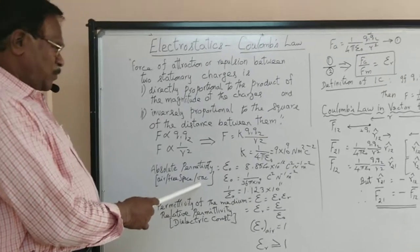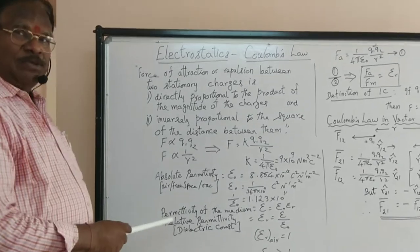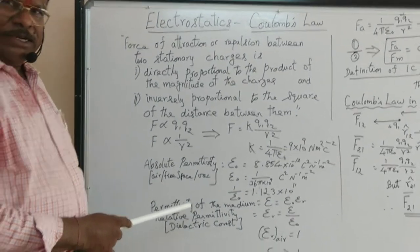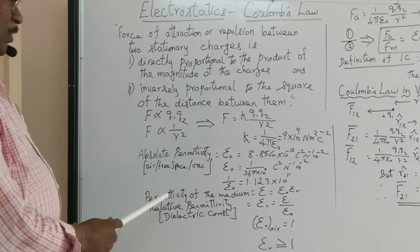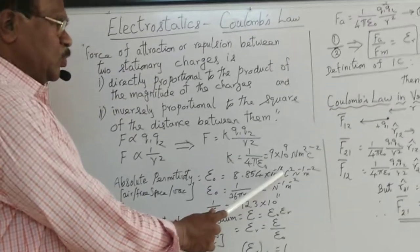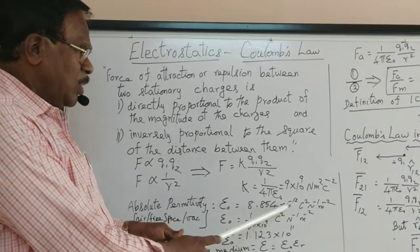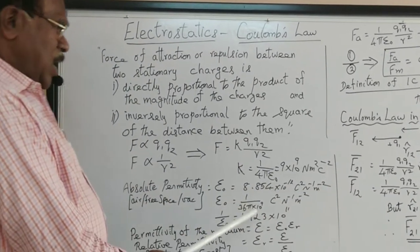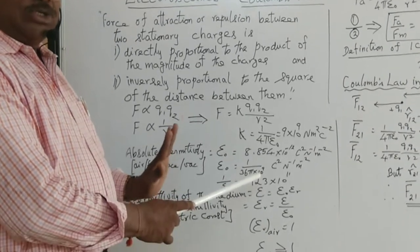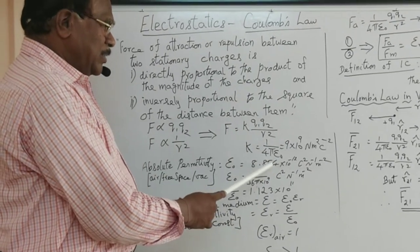For air, free space, or vacuum, the permittivity is otherwise called absolute permittivity. The word 'absolute' means not depending on any medium — independent of any medium, not taking the medium into consideration. This absolute permittivity ε₀ is given by 8.854 × 10⁻¹² coulomb squared per newton per meter squared.